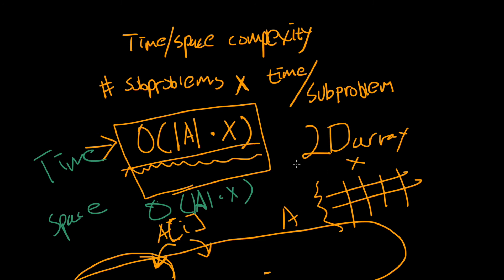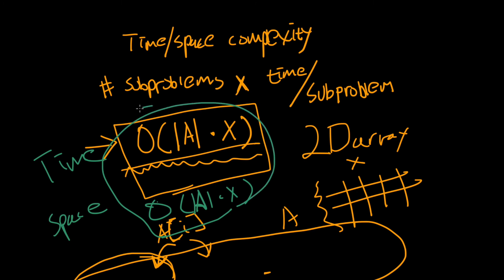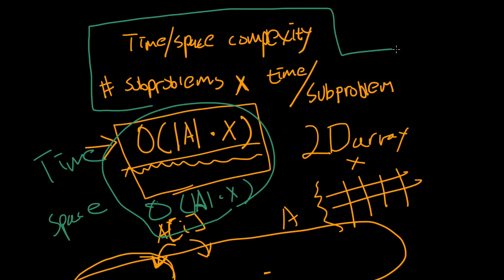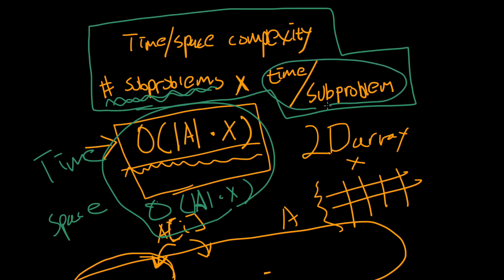Depending on the values in the array, the call stack size varies. Whether you use a bottom-up or top-down recursive algorithm, those are the answers. The general rule for DP time complexity is: number of sub-problems multiplied by the time it takes to solve that specific sub-problem. In our case, solving each sub-problem takes constant time, so we didn't need to add extra factors.